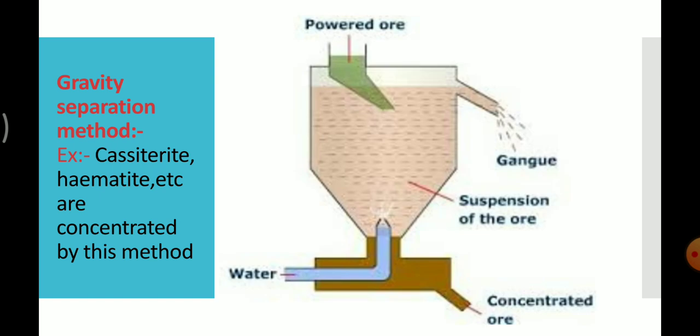This is the diagrammatic representation of the gravity separation method. In this method, ore is powdered and washed with an upward stream of running water. The lighter gangue particles are washed away — these are the unwanted impurities — and the heavier ore particles are left behind.